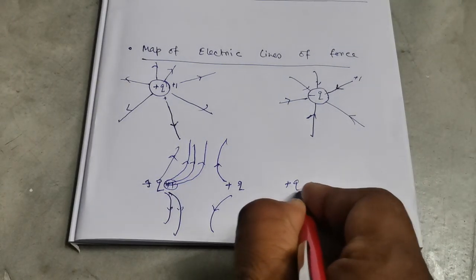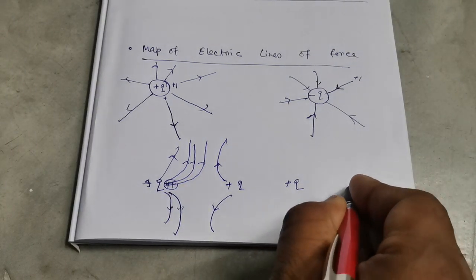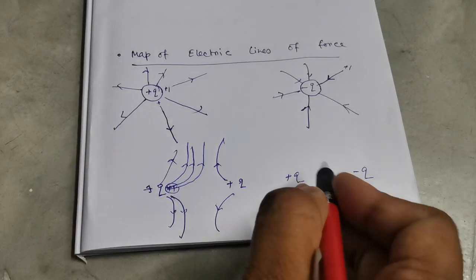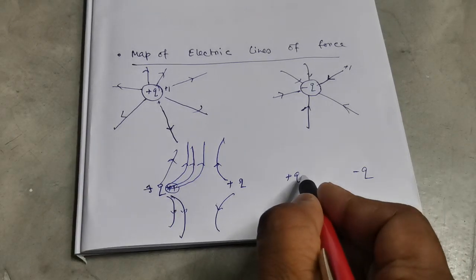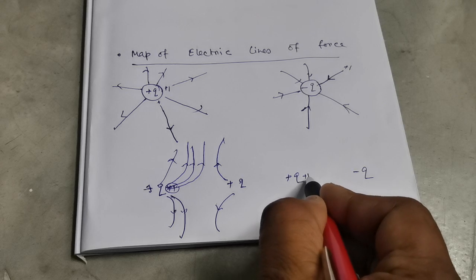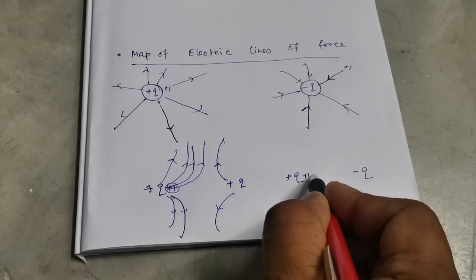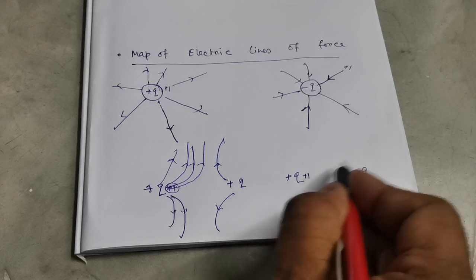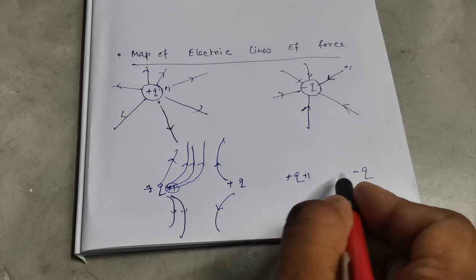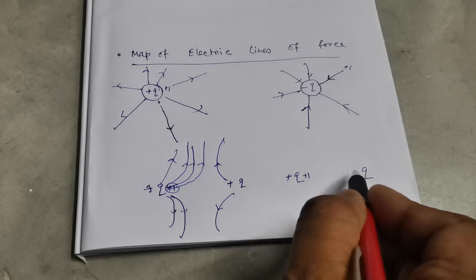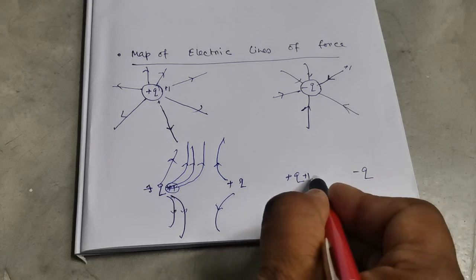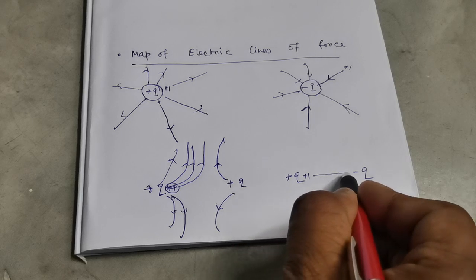I will go to the plus Q charge and minus Q charge — that is where the map is. This map is the same. What happens? This is the straight state. Because this is the minus Q and plus 1, this is the same.